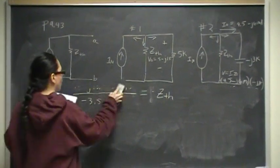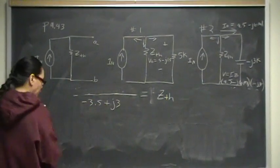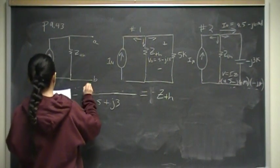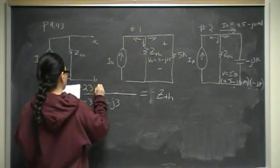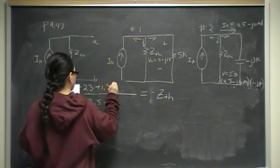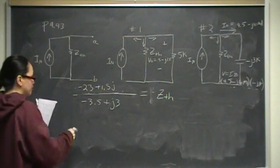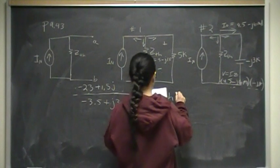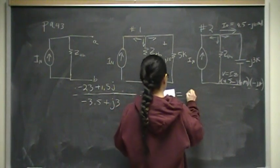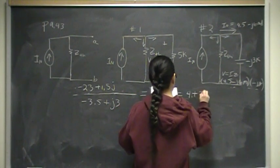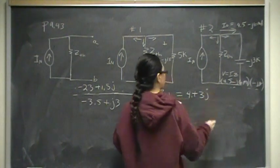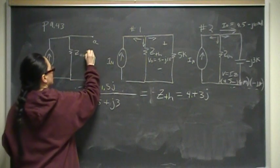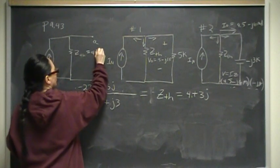On the top we have minus 18 minus 5, that gives me minus 23. And then I also have minus 13.5 J plus 15, which gives me positive 1.5 J. On top, when I combine all of my like terms, I really have negative 23 plus 1.5 J. And when I divide that out, I do that in my calculator, making sure that the parentheses are where they are supposed to be. My ZTH is 4 plus 3 J. That's one piece of my puzzle. Now I know ZTH was 4 plus 3 J.